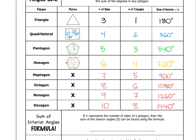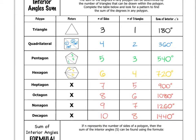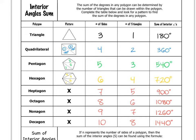I want you to ask yourself now, do you notice any patterns as you look throughout this table? Hopefully, one pattern that you notice is that the number of triangles that can be drawn is always two less than the number of sides. For instance, when we have a three-sided polygon, we can only draw one triangle; when we have four sides, we can draw two triangles; when we have eight sides — an octagon — we can draw six triangles. If you subtract two from the number of sides, you get the number of triangles. And we always take that number times 180 degrees to get the sum of the interior angles.